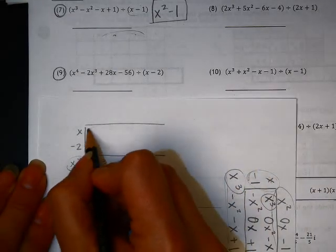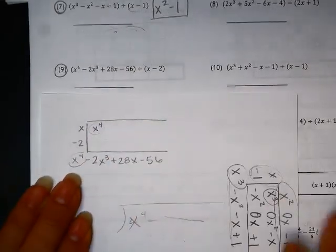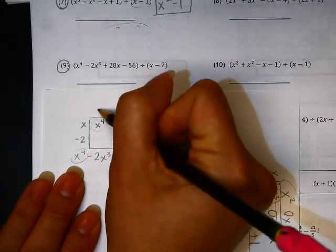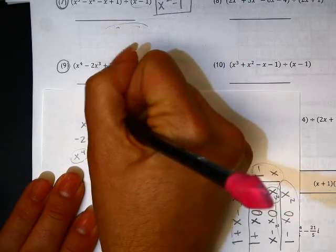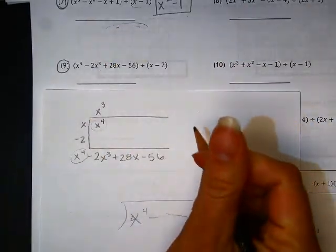You always start by putting this number here. So that is the same as our starting point for all of these. Then these two guys have to multiply to get that. So we have to create what that would be to make that happen.